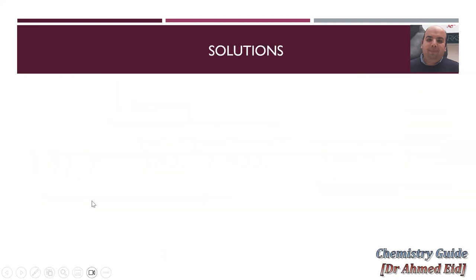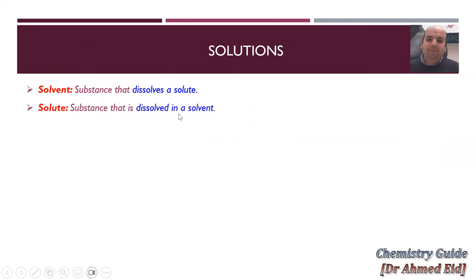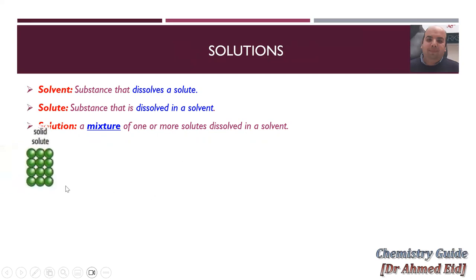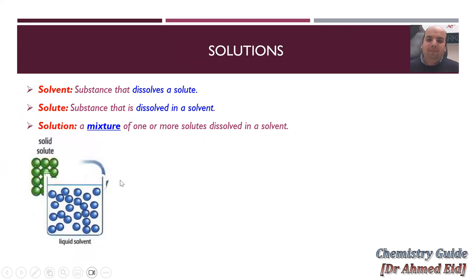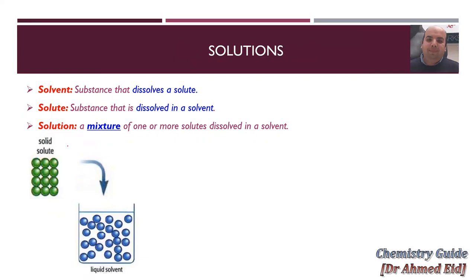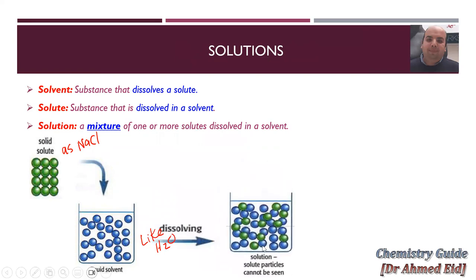Let's talk about solutions. The solvent is the substance that dissolves a solute. The solute is the substance that dissolves in a solvent. A solution is a mixture of one or more solutes dissolved in a solvent. For example, water as a solvent dissolves sodium chloride as a solute. If you have a solid solute like sodium chloride and add it to a liquid solvent like water, the solid dissolves to form a solution. The solid particles cannot be seen — if you dissolve salt in water, you cannot see the salt.